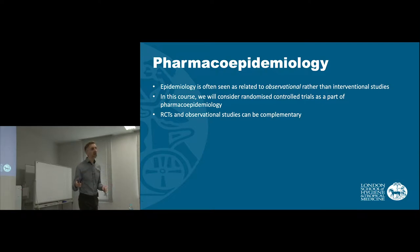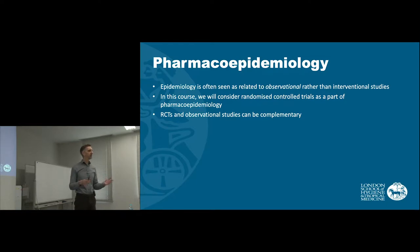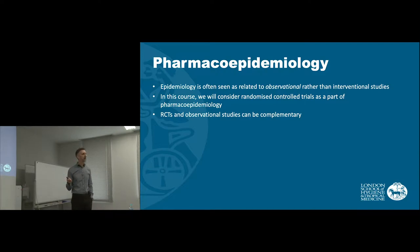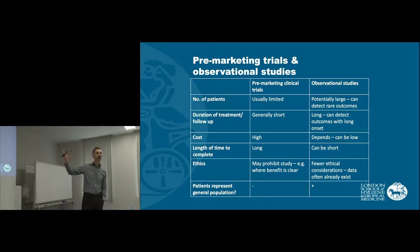I think we can potentially use both of these kinds of studies to try to investigate things like risk minimisation or to investigate safety signals further. I think that the two kinds of evidence that we get from both trials and non-randomised studies can be complementary. I've got a couple of slides explaining why I think they're complementary and what the different strengths and weaknesses are.